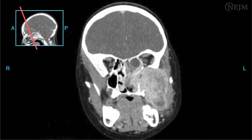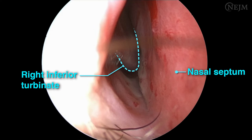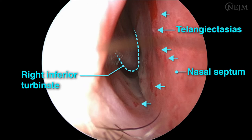Very severe or frequent unilateral nosebleeds should arouse concern about a more serious condition. One possibility is a benign or malignant neoplasm, which may cause concurrent asymmetric symptoms such as pain, nasal obstruction, rhinorrhea, double vision, or other cranial neuropathies. An unusually prolonged history of severe epistaxis should prompt concern about hereditary hemorrhagic telangiectasia, also known as HHT or Osler-Weber-Rendu syndrome. Any such concerns warrant consultation with an otolaryngology specialist.